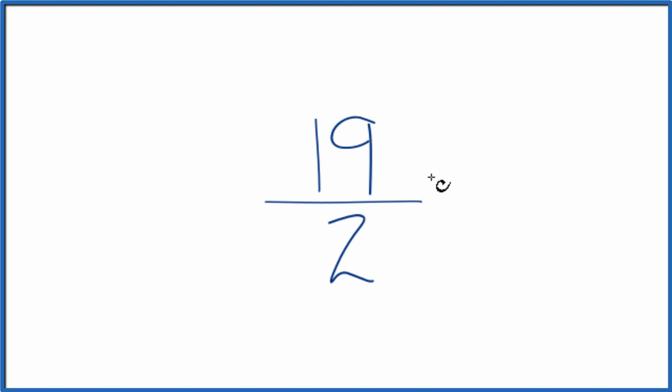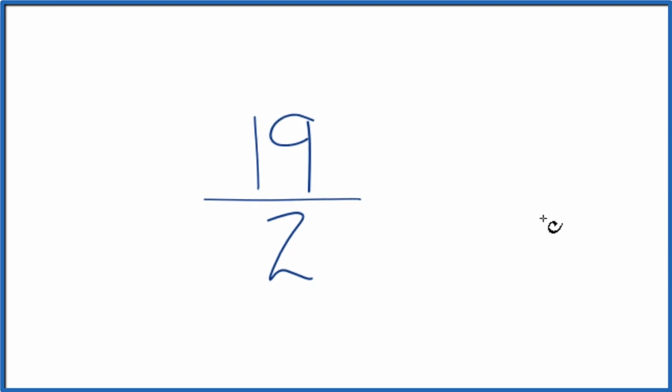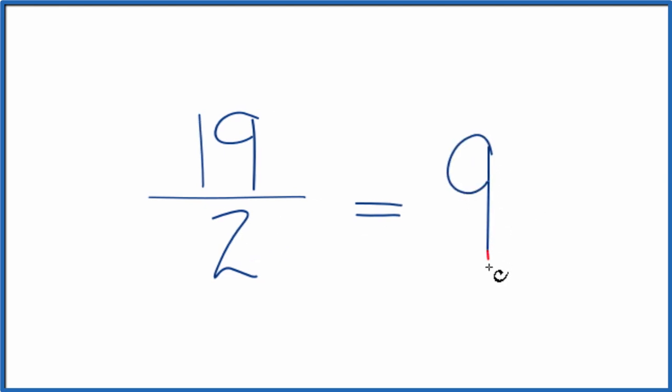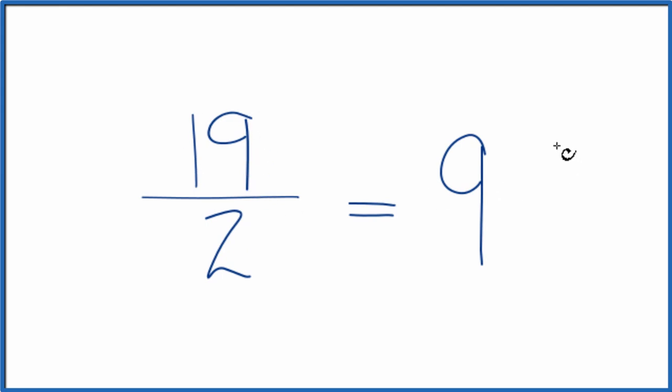Do note that this is an improper fraction. We have the numerator greater than the denominator, so we could change it to a mixed number. We take 19 and we divide that by 2. So 2 times 9, that's 18. So we'd have 1 left over, and then we just bring the 2 across.